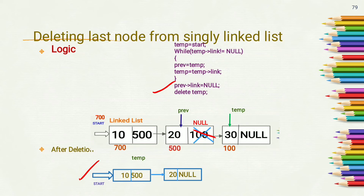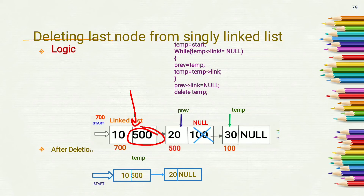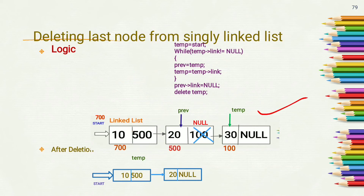After deletion we have a singly linked list containing two nodes having values 10 and 20. To summarize: first we point temp to the first node, then check temp->link. If it is not equal to null, we move previous to the node pointed by temp, then move temp to the next node. In this way temp will reach the last node and previous will point to the node just before it.